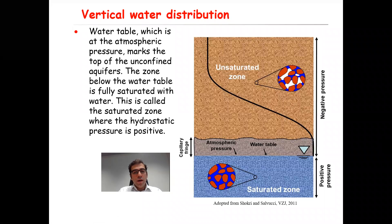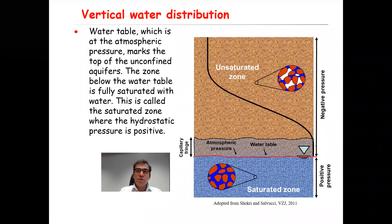As you know, an unconfined aquifer is bounded by a water table at the upper boundary. So in this schematic figure here, you see this level is the water table, and the water table is at the atmospheric pressure. This sign here indicates that this is the water table and the pressure is at atmospheric pressure.